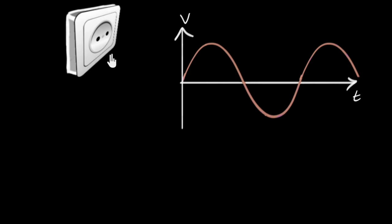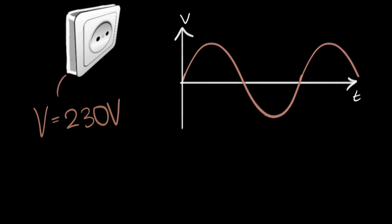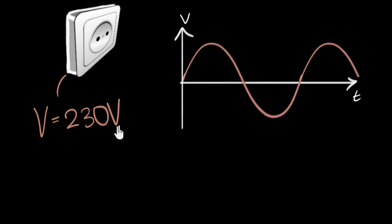You might know that the voltages we get from our socket in our houses is an alternating voltage. But I was very curious when I saw that in India, the voltage we get is 230 volts. I was thinking, the voltage is fluctuating continuously — so what does this 230 volts represent?